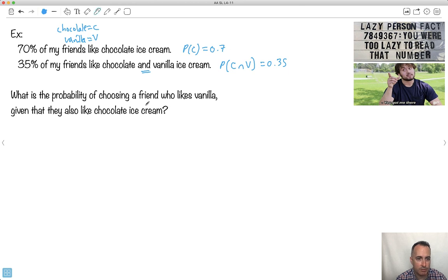Now, what are we asking for here? We want, what do we want? We want probability of choosing a friend who likes vanilla. So I want probability of vanilla given, oh, that means I do this, given that they also like chocolate. Do you see what I'm doing? I want this, probability of vanilla given chocolate. Well, I'm going to use that formula.